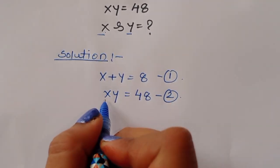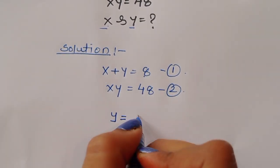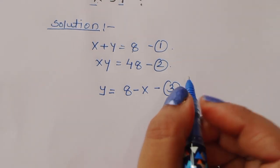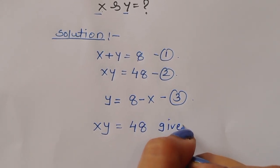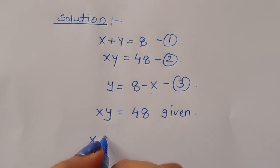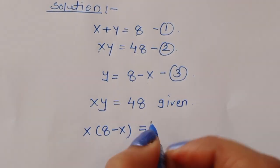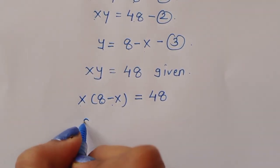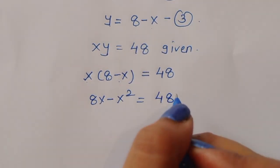We can do one thing here — express y as 8 minus x. So y equals 8 minus x. This is equation 3. Now xy equals 48 is given, so substituting equation 3: x times (8 minus x) equals 48. Expanding gives 8x minus x squared equals 48.